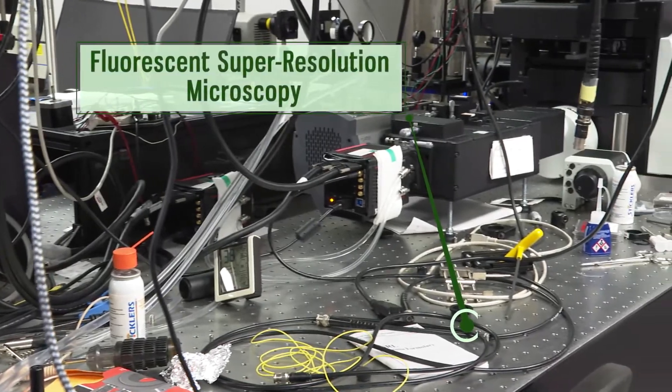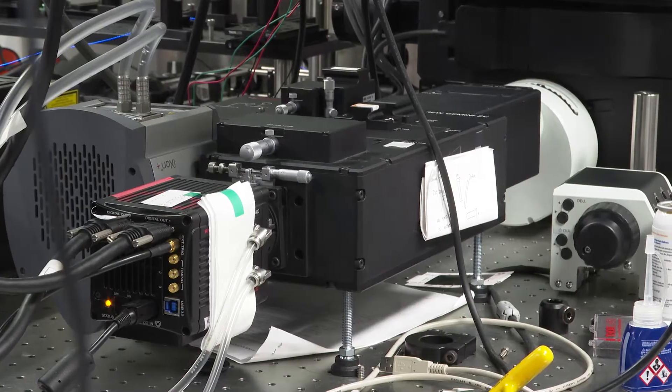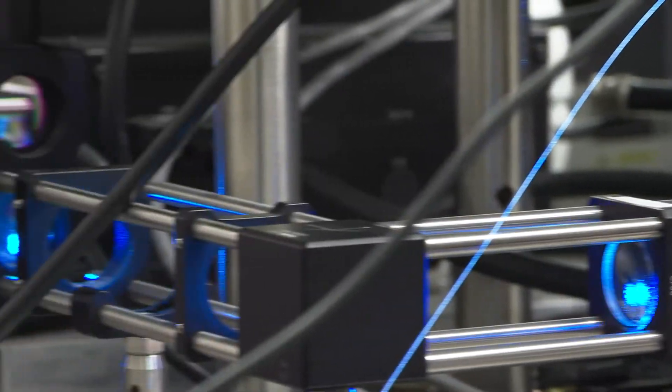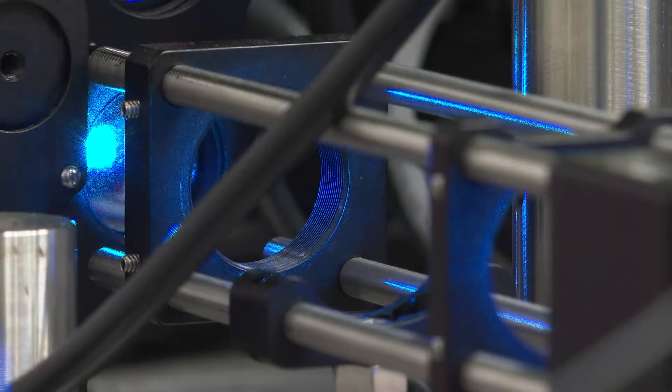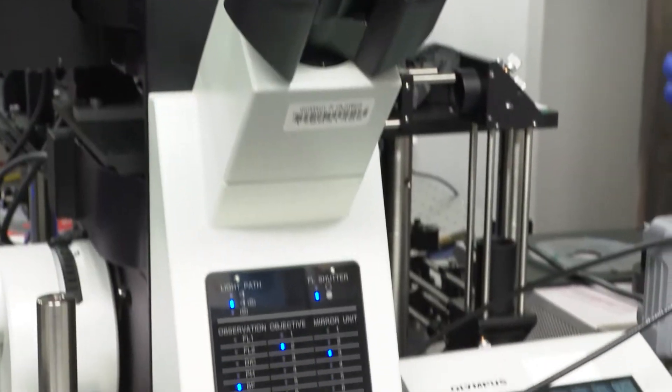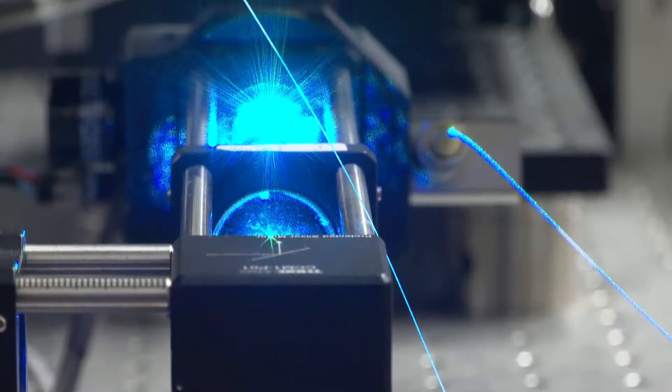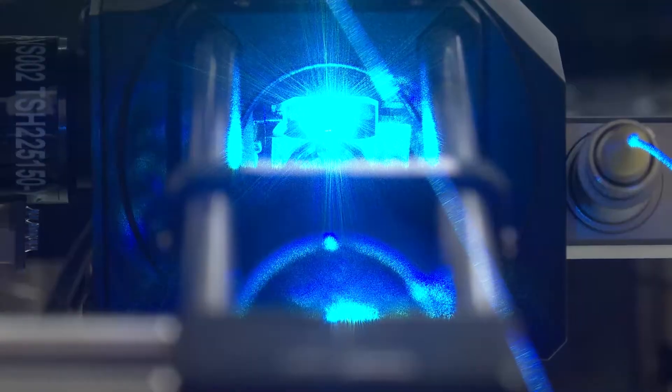This station is a custom-built imaging setup for fluorescent super-resolution microscopy. The custom optics allow for higher-speed laser scanning of the sample. Combined with specially designed metamaterials, this microscopy technique can improve image resolution by 5-fold compared to diffraction limit with high acquisition speed.